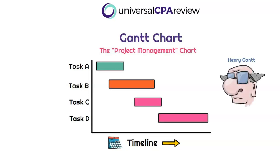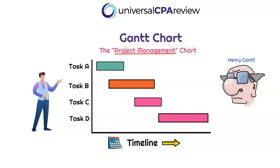A Gantt chart, created by Henry Gantt, is primarily focused on project management. On the Y-axis we have the various tasks, and going across are horizontal bars representing the start date, end date, and duration of each activity. We can see task A starts first, task B starts partway through task A's timeline, and then C and D follow. This allows the whole team to be aligned on what tasks need to be performed, when they start, when they end, and their duration.